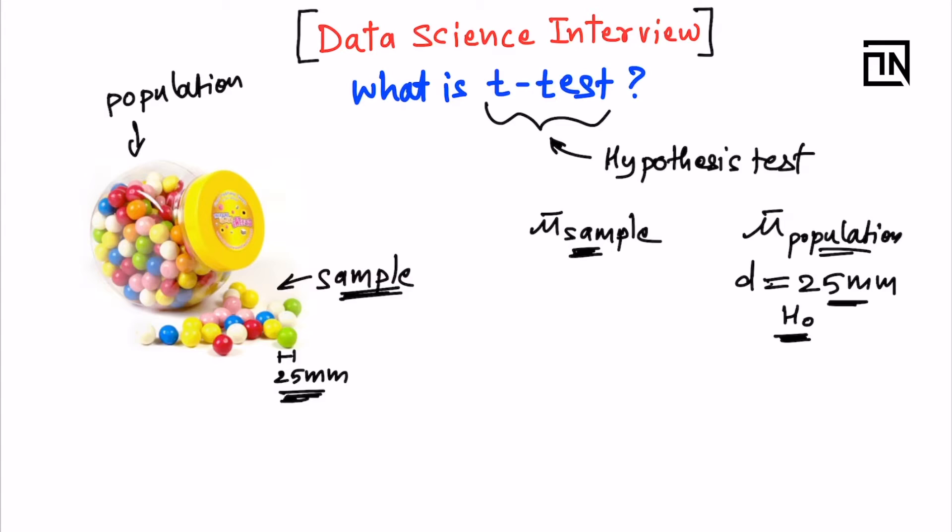With this expectation, if I take all the gums from this population, the average should come ideally to be 25 mm. Instead of measuring each and every gum present in this jar, I'm taking a sample of let's say 20 gums. Then I start measuring the diameters for this sample.